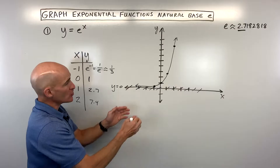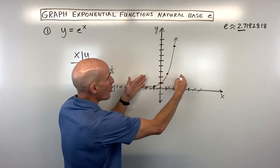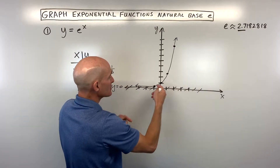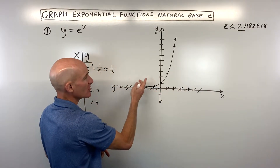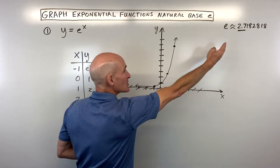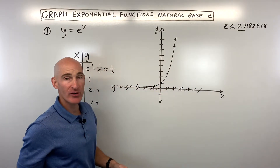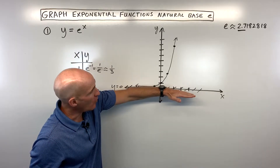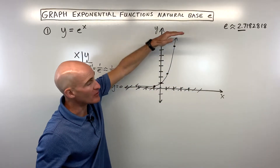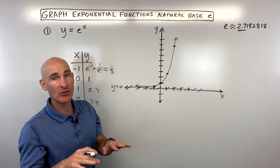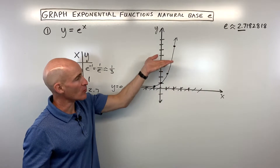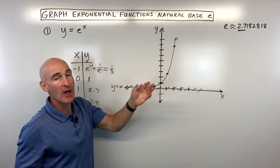You can see it's getting closer and closer to the x-axis. This is our horizontal asymptote — you can draw this as a dashed or dotted line. It's the line y is equal to zero. So our domain is going to be all real numbers because the graph goes to the left and right forever. But the range is going to be y is greater than zero.